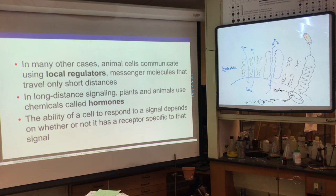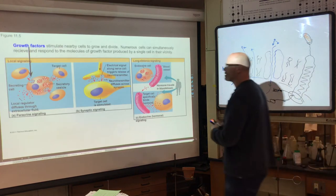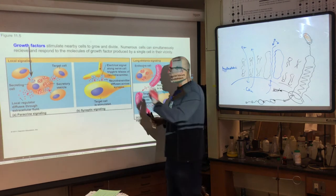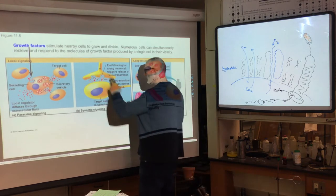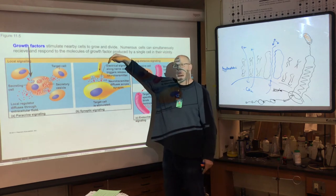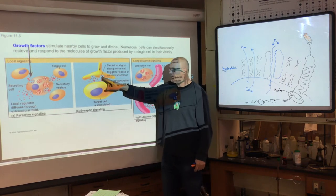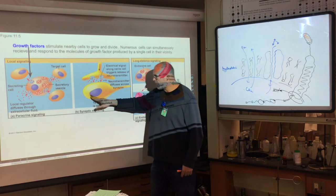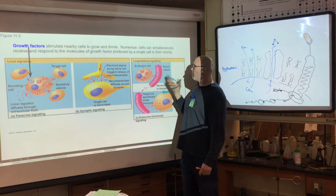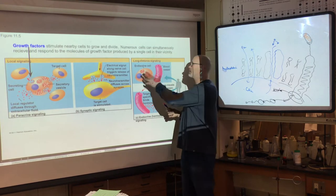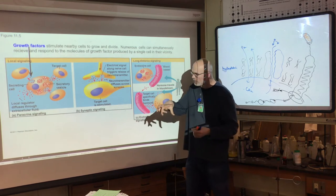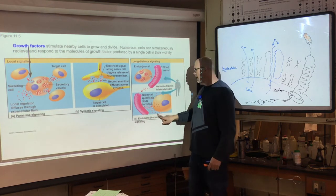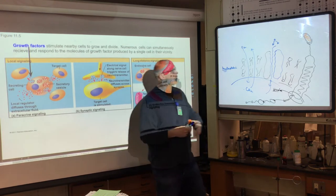Growth factors are a local signaling example — target cells with specific receptors receive the signal. Nerve communication is another local example: the end of one nerve sends a chemical signal to the head of another nerve to continue an action potential. For long-distance signaling, the endocrine cell of the adrenal gland releases epinephrine into the bloodstream, traveling throughout the body. These G-protein-coupled receptors create different responses depending upon what the cell does.